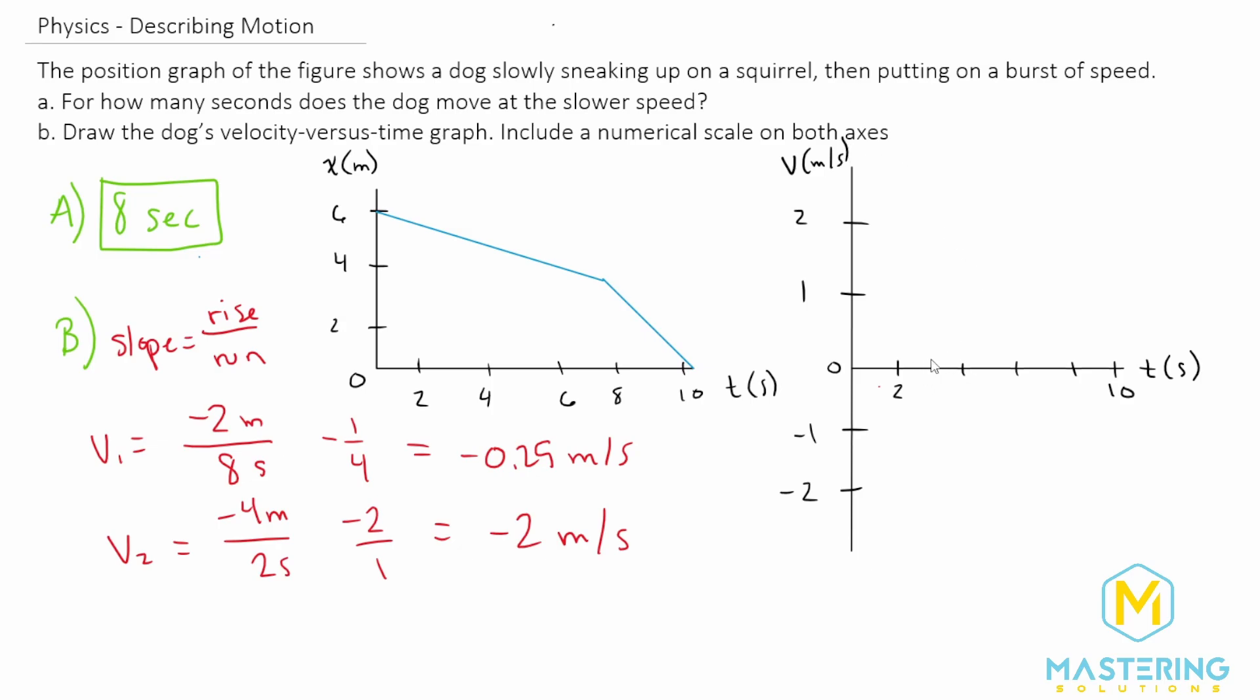And now we just have to plot this. And so we have a negative 0.25 meters per second. So that's about right here. And it moves all the way to eight seconds. So we have the flat line indicating that it's moving at a constant velocity, doesn't mean it's standing still, because a velocity versus time graph indicates it's moving at the same speed. And then it jumps all the way down here to a negative two meters per second for two seconds. So here is our velocity versus time graph for part B.